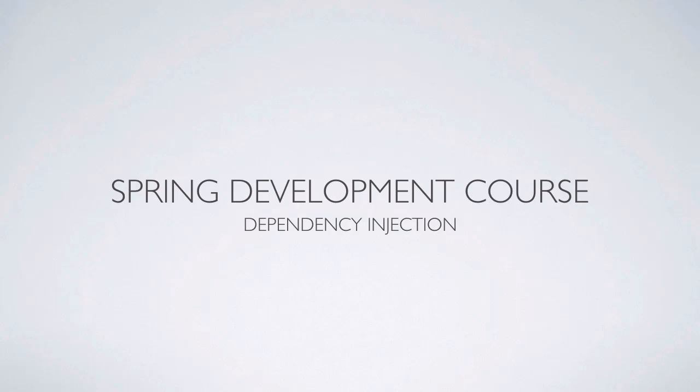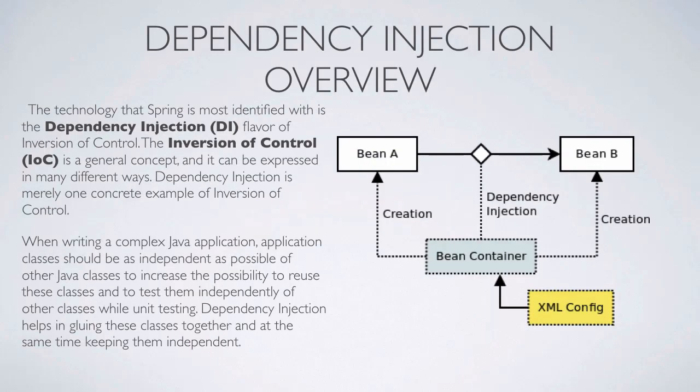The first thing we need to understand is dependency injection. The technology that Spring is most identified with is the dependency injection — the DI flavor of inversion of control. Inversion of control, or IoC, is a general concept and it can be expressed in many different ways. Dependency injection is merely one concrete example of inversion of control.